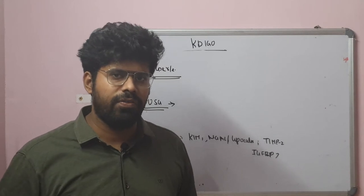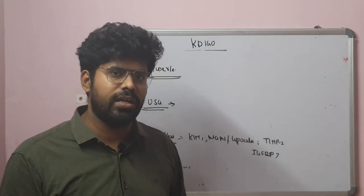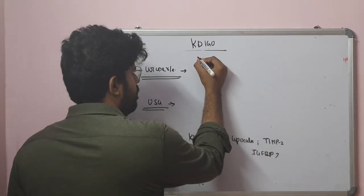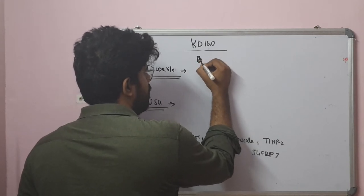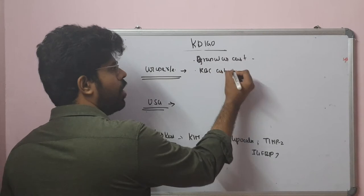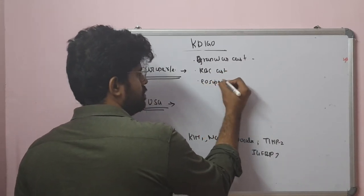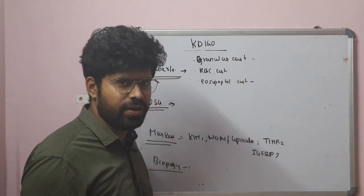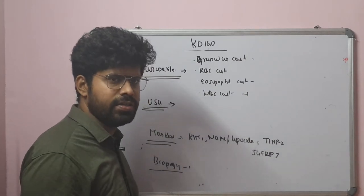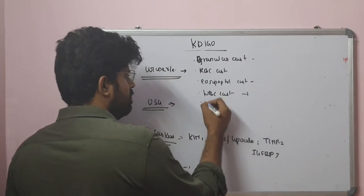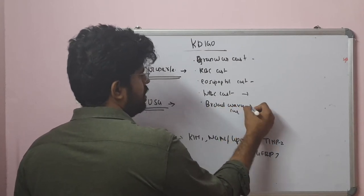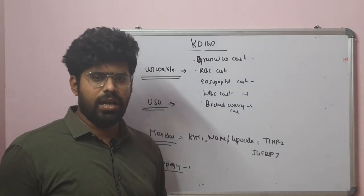Ultrasound findings: CKD patients will have a contracted kidney with loss of corticomedullary differentiation. AKI patients usually have a normal kidney on ultrasound. Clues to AKI etiology: a large kidney with CKD suggests diabetic nephropathy, infiltrative disorders, or HIV nephropathy. Renal arteriography or renal Doppler can be tried if there is unilateral shrunken kidney. Urine routine findings: granular cast indicates acute tubular necrosis; RBC cast indicates glomerulonephritis; eosinophil cast indicates allergic interstitial nephritis or pyelonephritis; WBC cast indicates acute tubular necrosis, pyelonephritis, or allergic interstitial nephritis; broad waxy cast indicates chronic kidney disease or nephrotic syndrome.